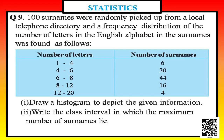Question number nine says: 100 surnames were randomly picked up from a local telephone directory and a frequency distribution of the number of letters in the surnames was found as follows. The first column shows number of letters: 1 to 4, 4 to 6, 6 to 8, 8 to 12, and 12 to 20. The number of surnames is 6, 30, 44, 16, and 4. We are asked to draw a histogram and write the class interval with the maximum number of surnames.